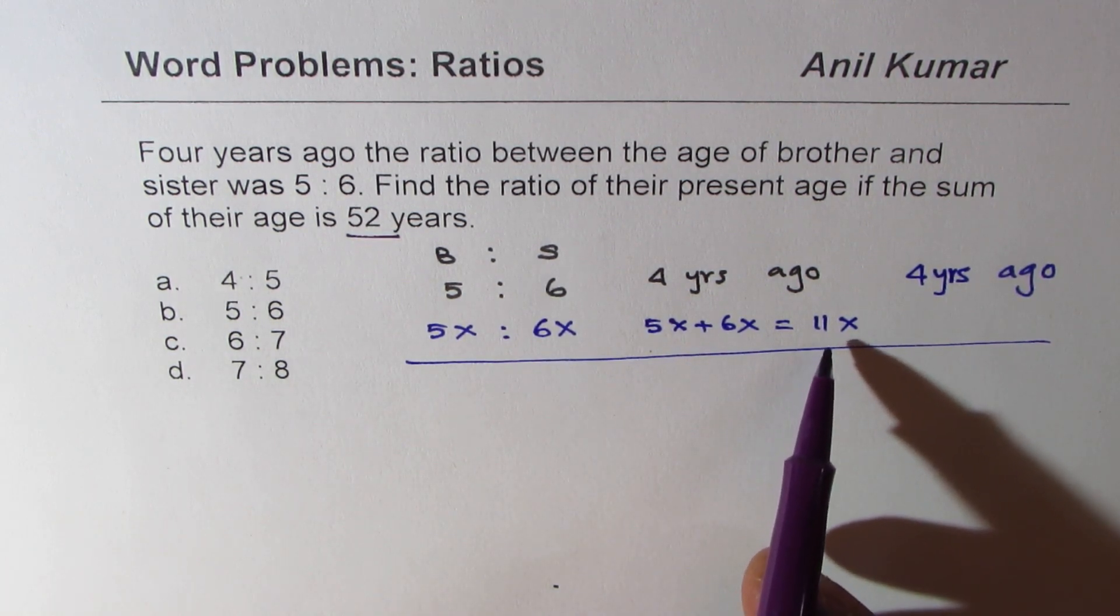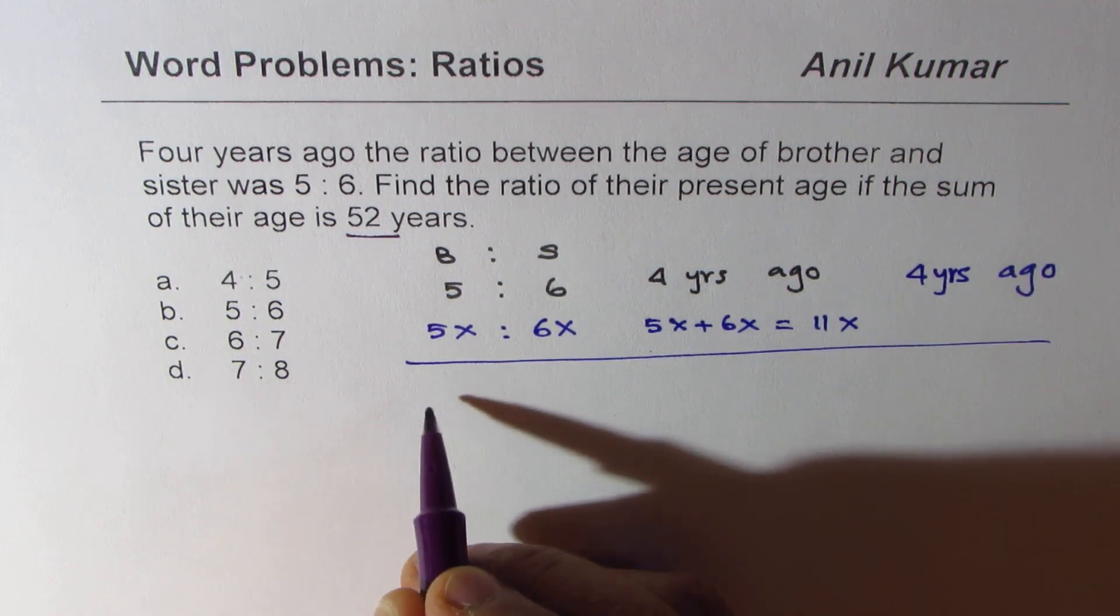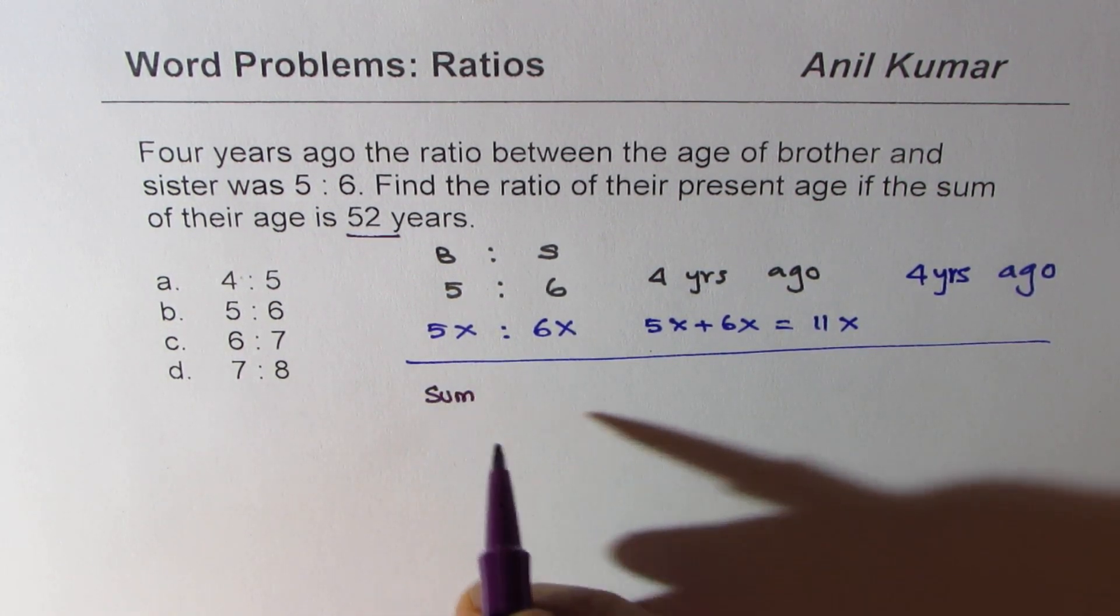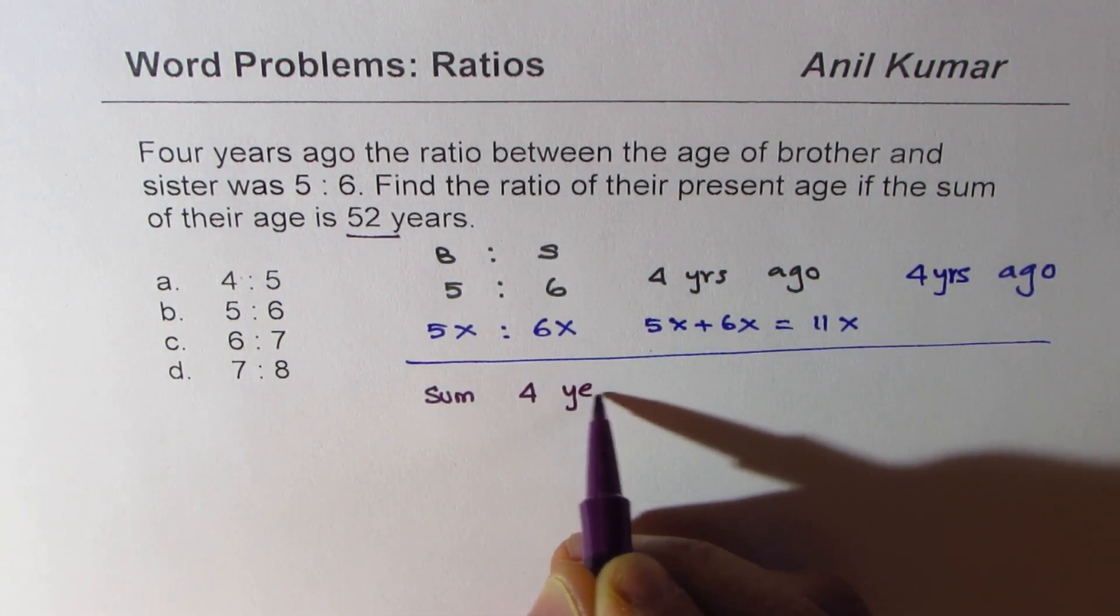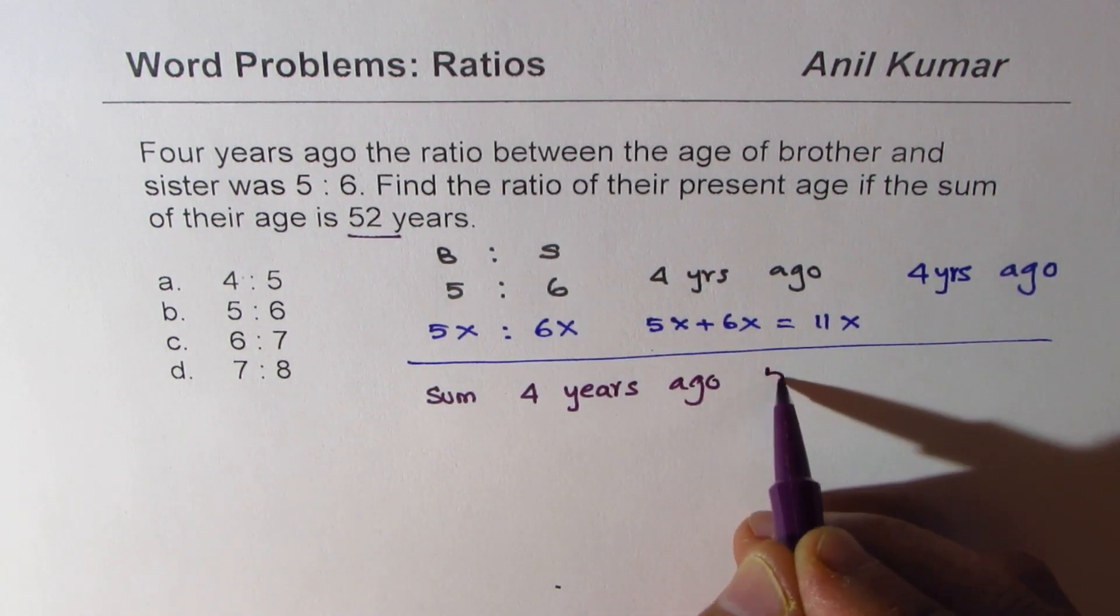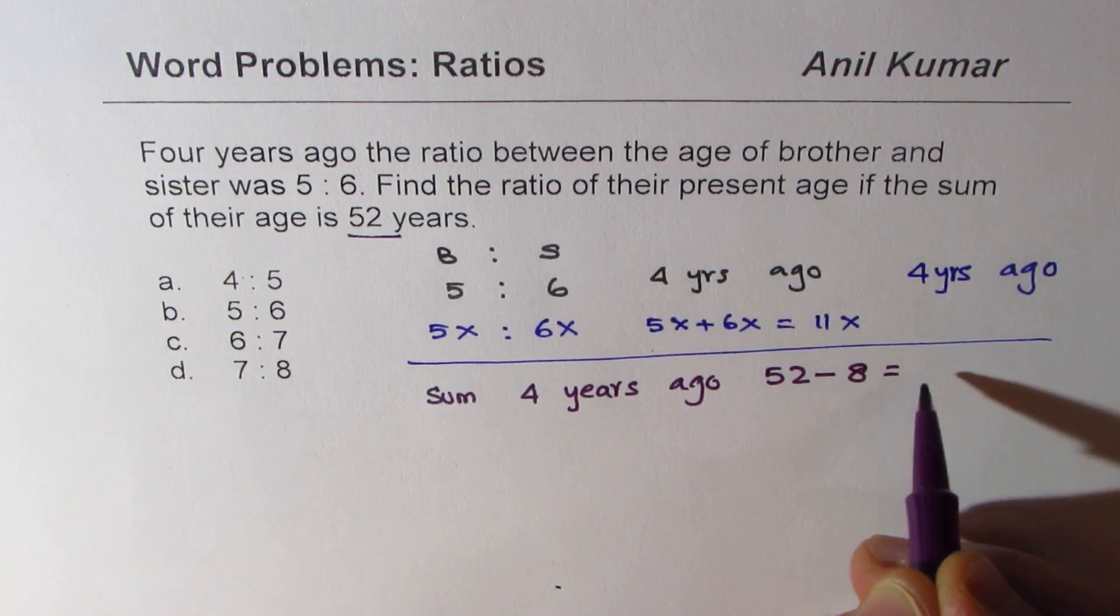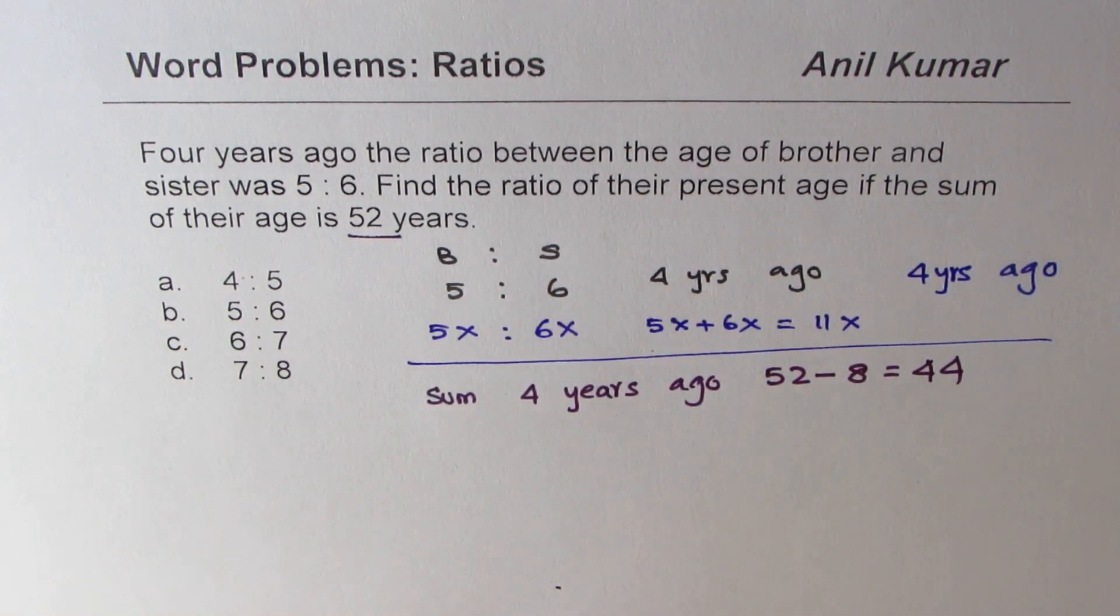But we know four years back it was 11x. So sum four years ago will be how much? It will be 52 minus 4 and 4, 8 right. So that gives you 44. Do you see that?